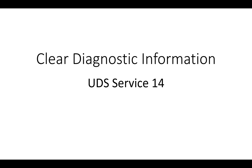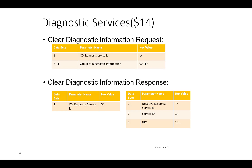Let's see the request and response format. For the request, first comes the service ID, followed by three bytes indicating the group of DTCs that we want to clear — for example from the powertrain, body, or chassis. Practically, the specific DTC you want to clear can be provided here using a specific mask.